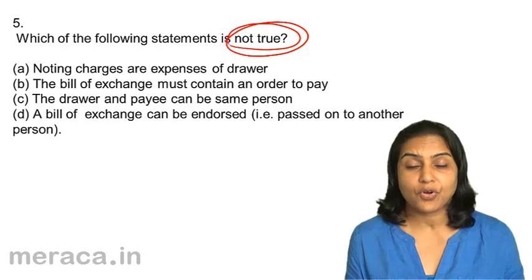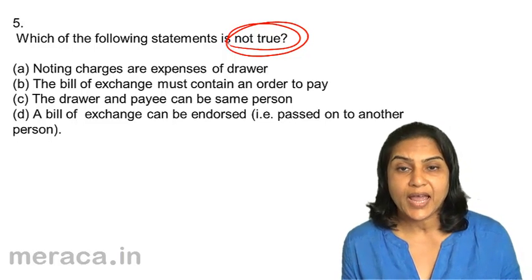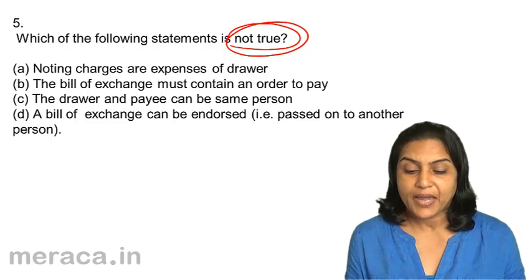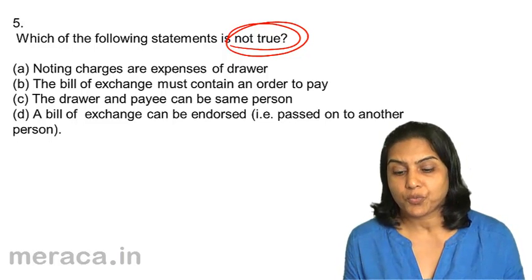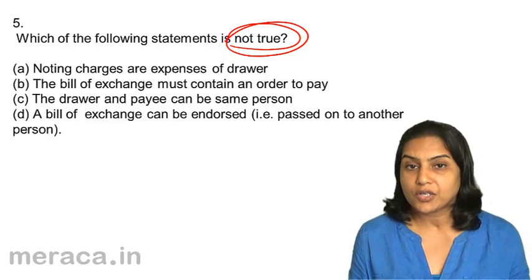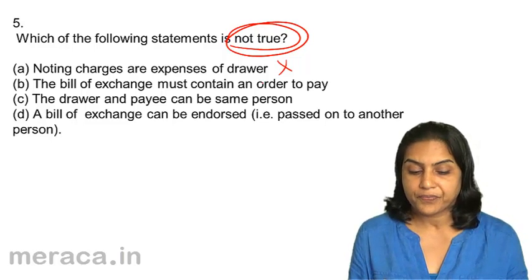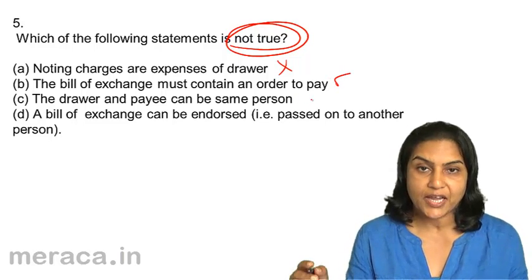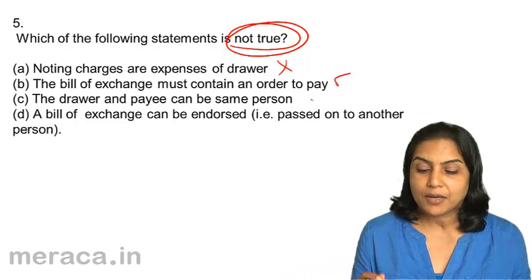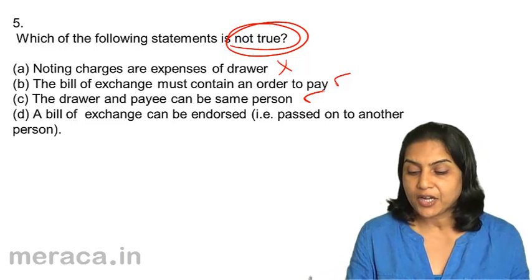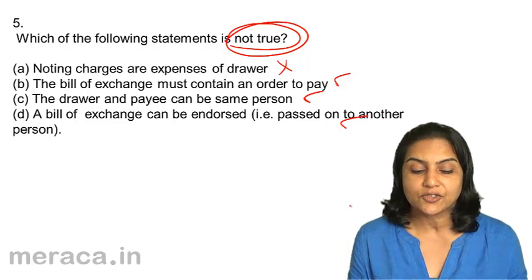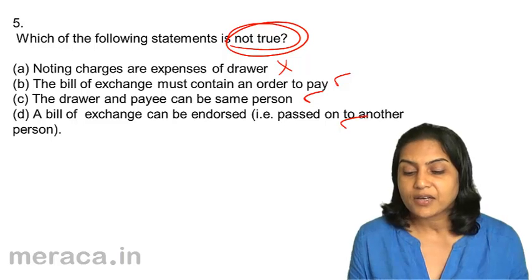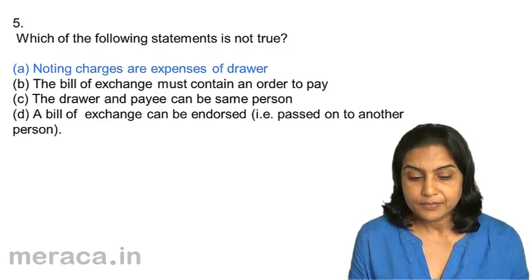Noting charges are the expenses of the drawer — if X draws a bill on Y, Y accepts it. Y is the person responsible to pay and would bear the noting charges if the bill is dishonoured. Y is not the drawer; X is the drawer. So this statement is obviously wrong. The bill must contain an order to pay is true. Drawer and payee can be the same person is true. A bill can be endorsed as a negotiable instrument — true. Therefore correct answer is 5A.